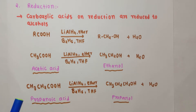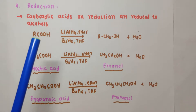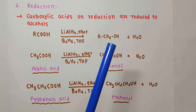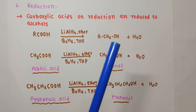Similarly, if you take methanoic acid (formic acid), upon reduction it gives methanol. So remember that reduction of a carboxylic acid gives you the corresponding primary alcohol with the same number of carbon atoms.